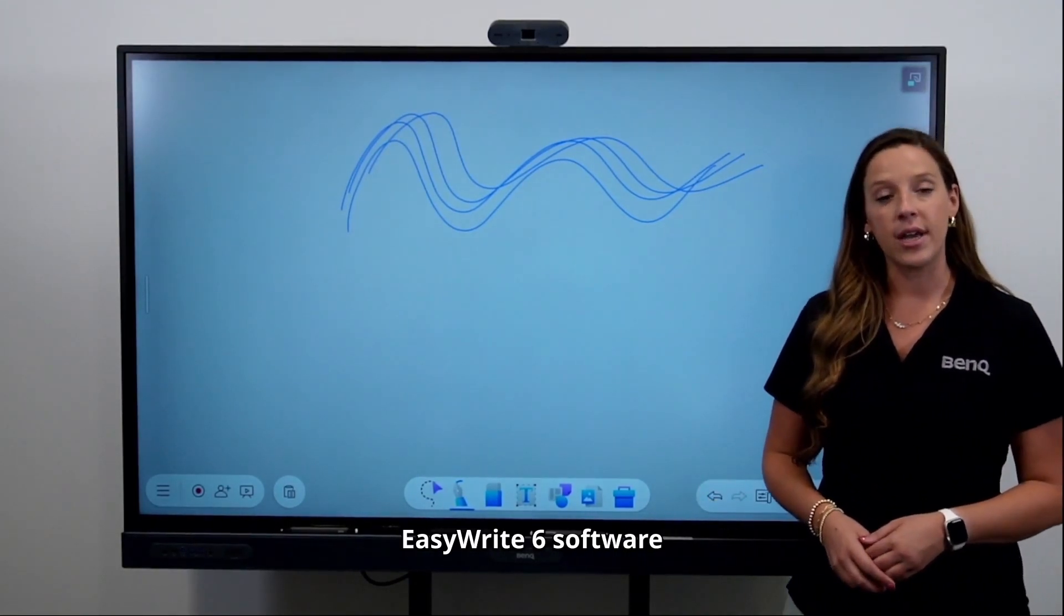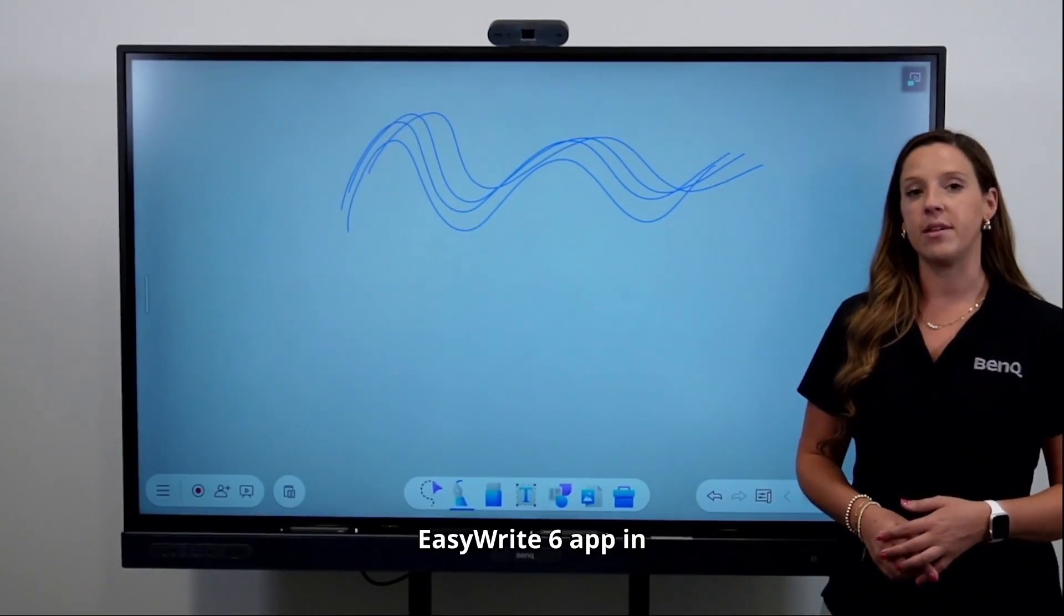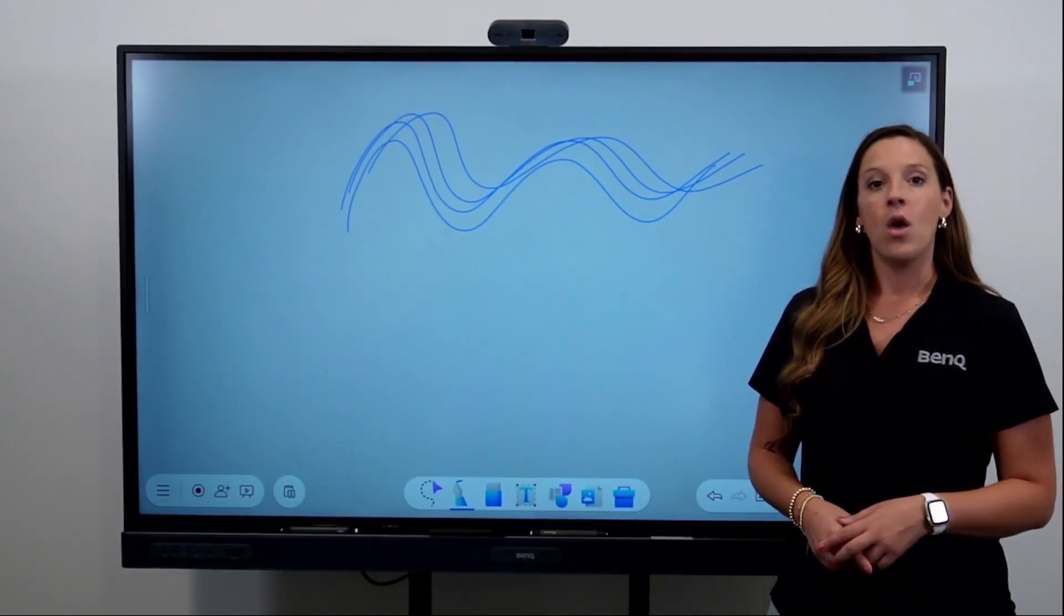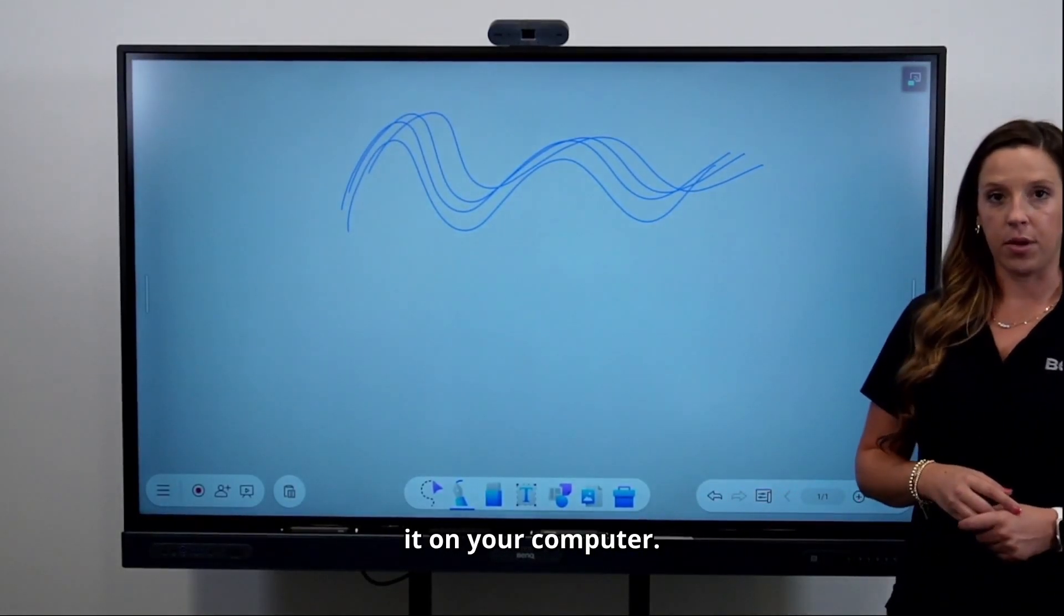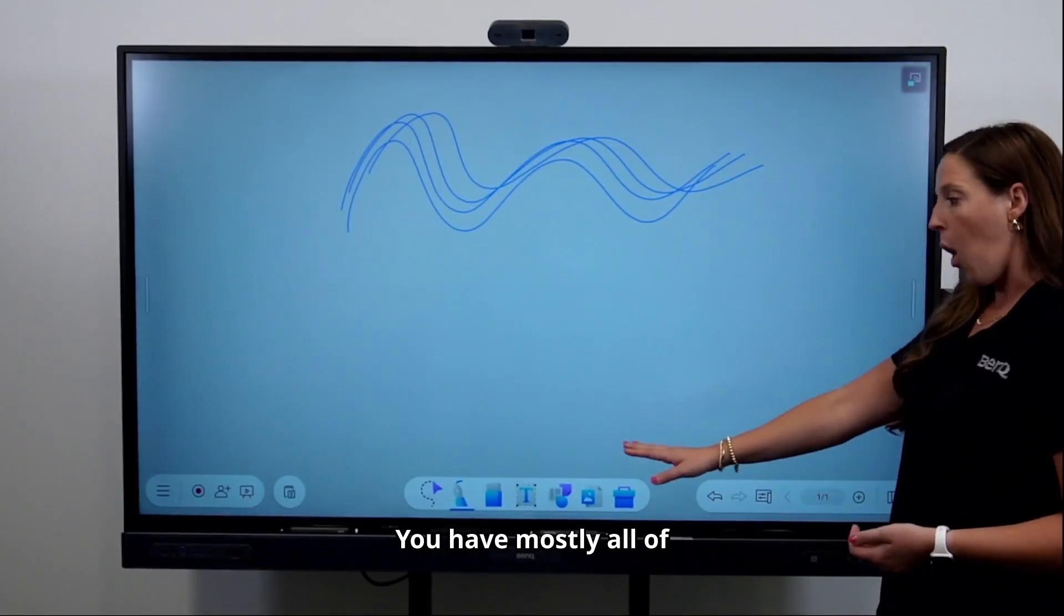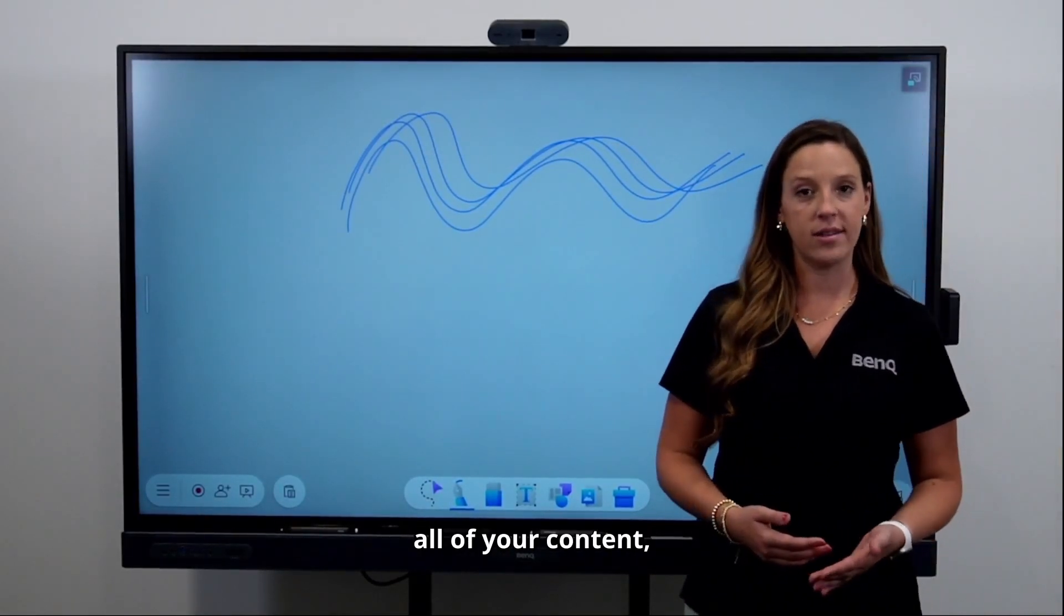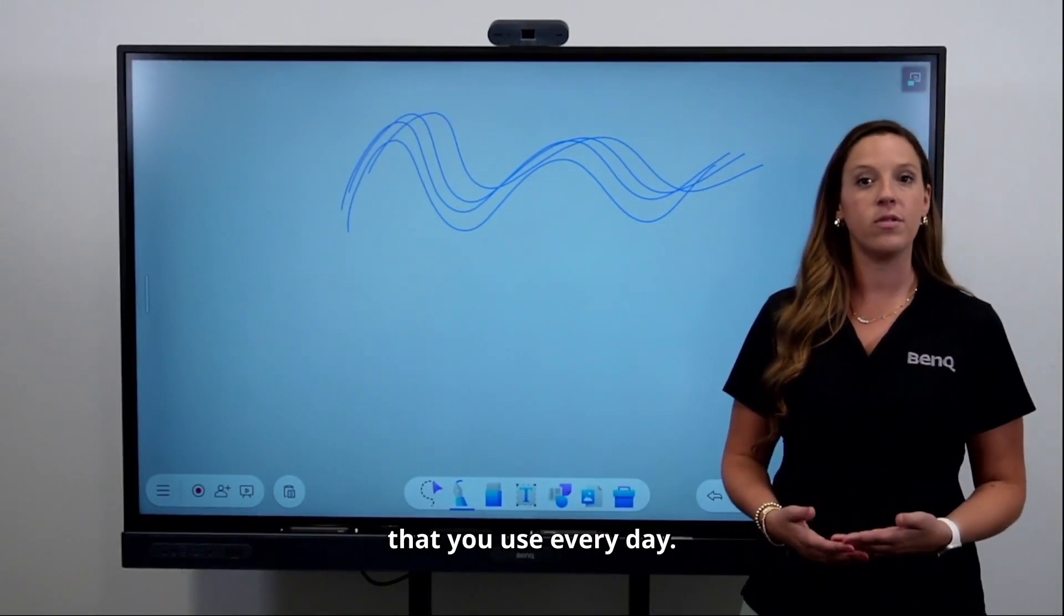You can download our EasyWrite 6 software directly from our website, but we also have the EasyWrite 6 app in the Play Store and the Apple Store. When you download that software, it will look exactly like this when you open it on your computer. You have mostly all of the same resources and tools to be able to embed all of your content, as well as create all of those manipulatives and resources that you use every day.